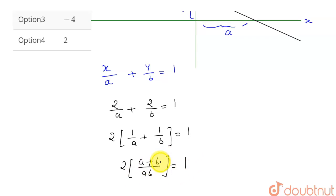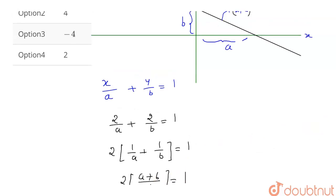From here, I can write 2 times a plus b upon ab is equal to 1. See, this a plus b we need to find. So, for that we have to first find this ab. So, how can we find this ab?